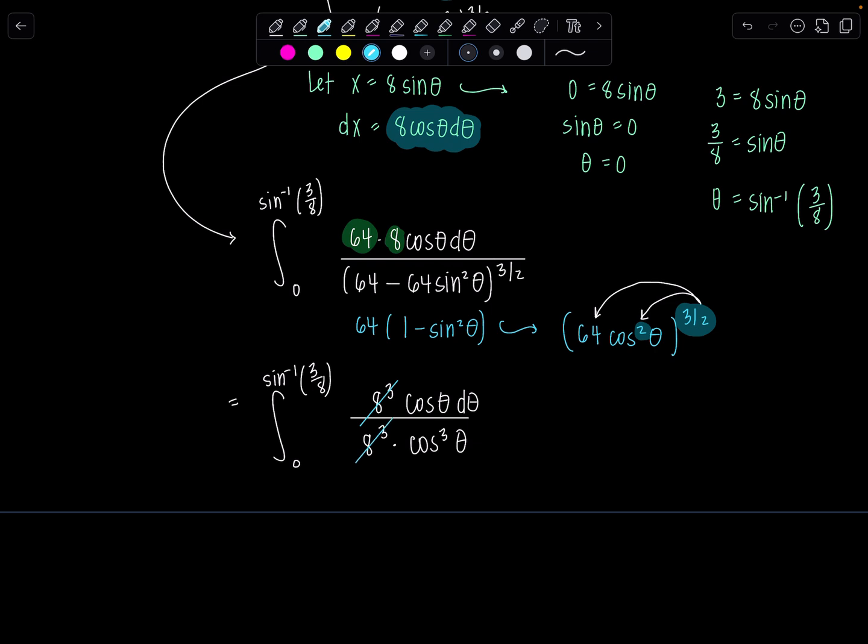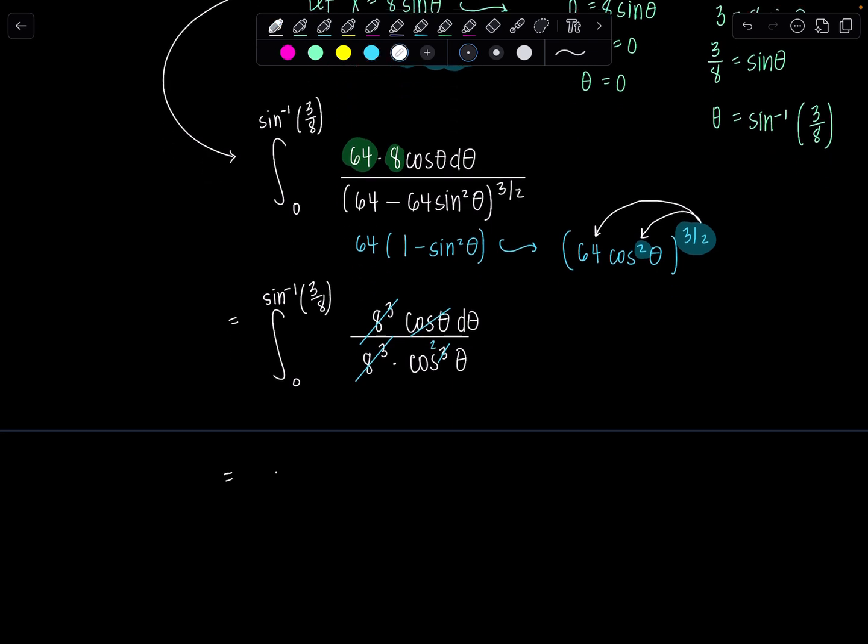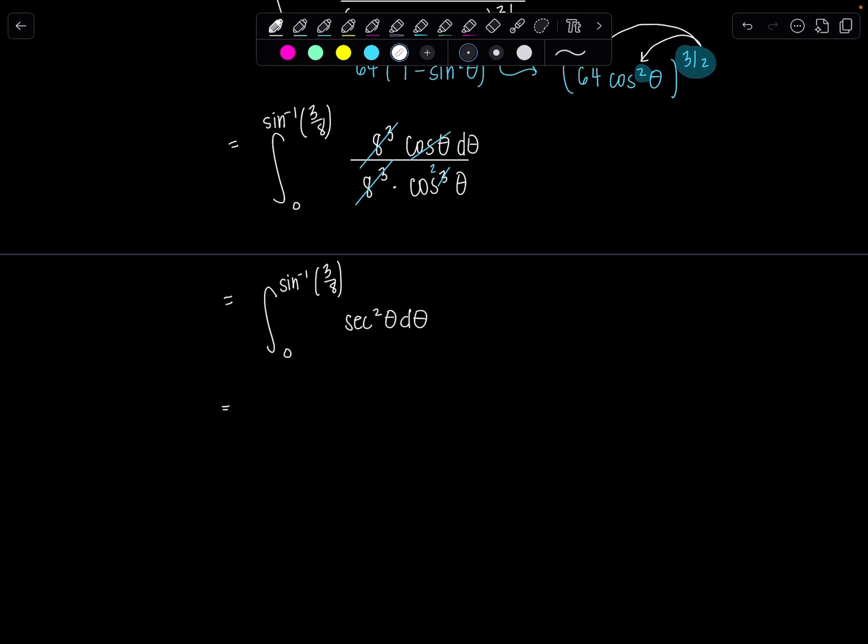So 0 sine inverse of 3 eighths. If I have cosine squared theta in the denominator, then that's the same as having secant squared theta in the numerator as my integrand. Do we know the antiderivative of secant squared theta? The answer ought to be yes. That should be one you put to memory. This is just tangent theta. And now we're going to evaluate it at our limits of integration, sine inverse of 3 eighths and 0.